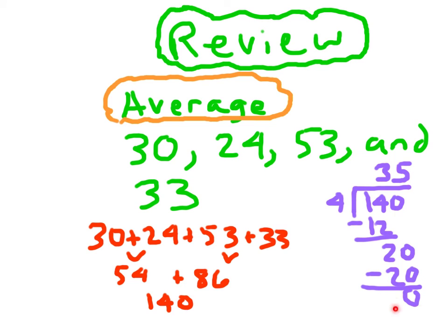Again, if you ever ended up with the remainder here, you probably did something wrong. Maybe you divided by the wrong number, or maybe you added those numbers incorrectly. What is our average then for all these numbers? 35. It makes sense. It should not be as low as 24. It should not be as high as 53.